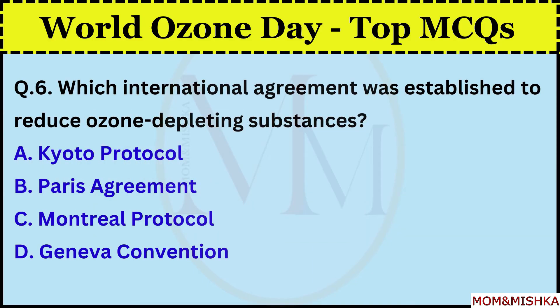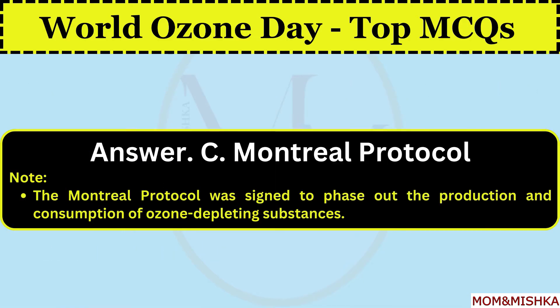Which international agreement was established to reduce ozone-depleting substances? Montreal Protocol. Option C. It was signed to phase out the production and consumption of ozone-depleting substances.